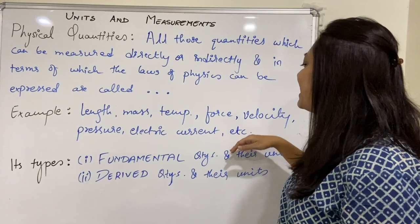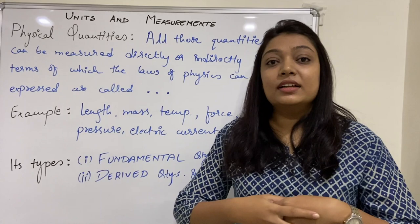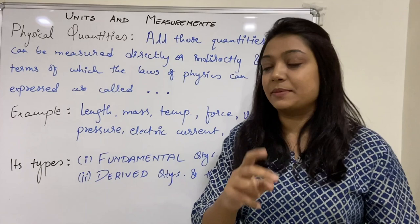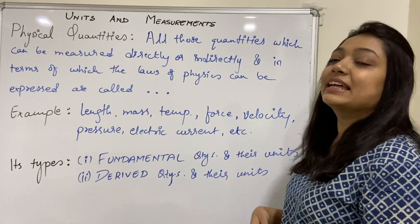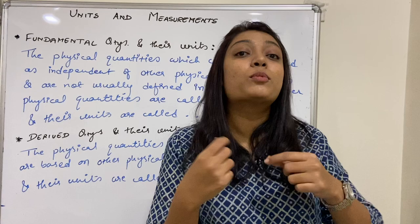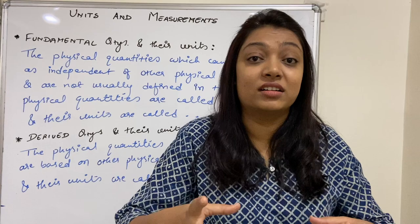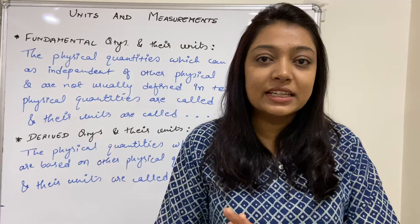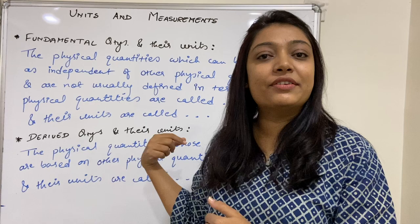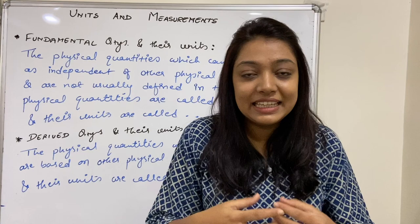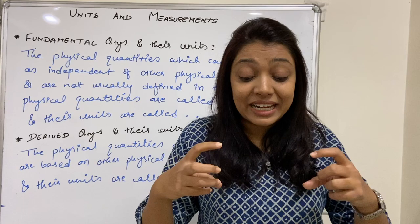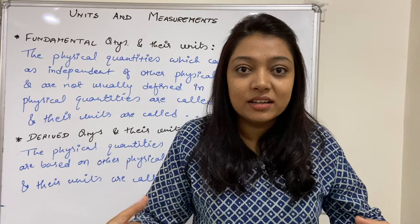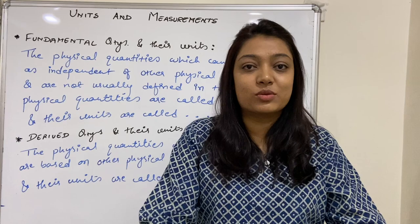Now further, these physical quantities can be categorized into two types: first is fundamental quantities and their units, and the second is derived quantities and their units. Fundamental quantities are also called base quantities. Fundamental means sabse pehle — inke pehle koi nahi aaya. Whereas derived quantities yeh saare fundamental quantities se aaye hain — these are derived from fundamental quantities.